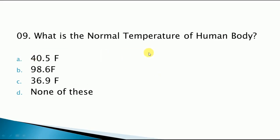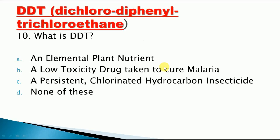What is the normal temperature of the human body? In Celsius it is 37, and in Fahrenheit it is 98.6. What is DDT? It stands for dichlorodiphenyltrichloroethane. The correct answer is a persistent chlorinated hydrocarbon insecticide — option number C is the correct answer for this question.